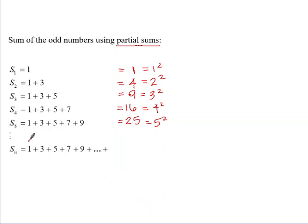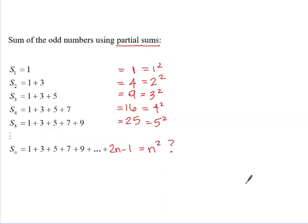Here's how we can write this out. The way that we generally write odd numbers as a formula is 2n minus 1. You can check: if you plug in 1 you get 1, plug in 2 you get 3, plug in 3 you get 5, etc. So we can hypothesize that the sum of n odd numbers is going to be n squared. Mathematical induction is a tool that we can use to prove this.